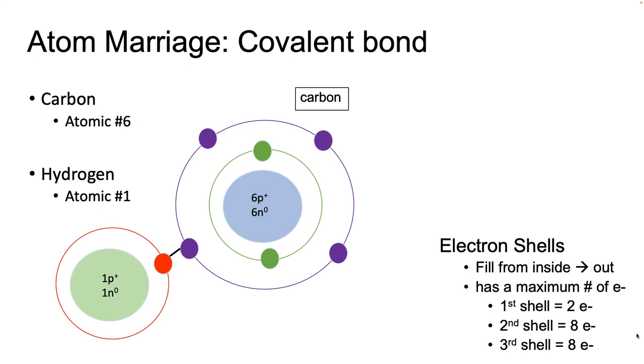So let's check on our octet rule. I'm going to check hydrogen first. Hydrogen's valence shell is the first shell. To be happy, we need two electrons in this shell to fill it. Hydrogen started with one electron, and now that we've formed a covalent bond, it can also count one electron from carbon. So in its first shell, its valence shell, it can count two electrons, so yes. Hydrogen is happy.